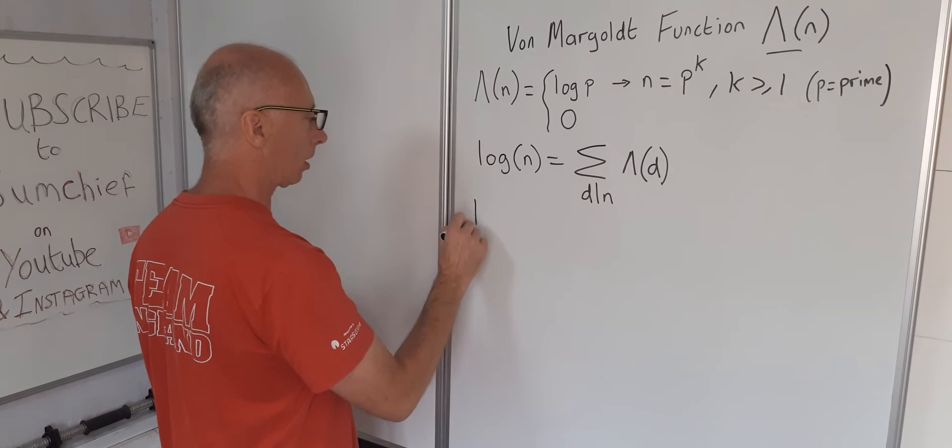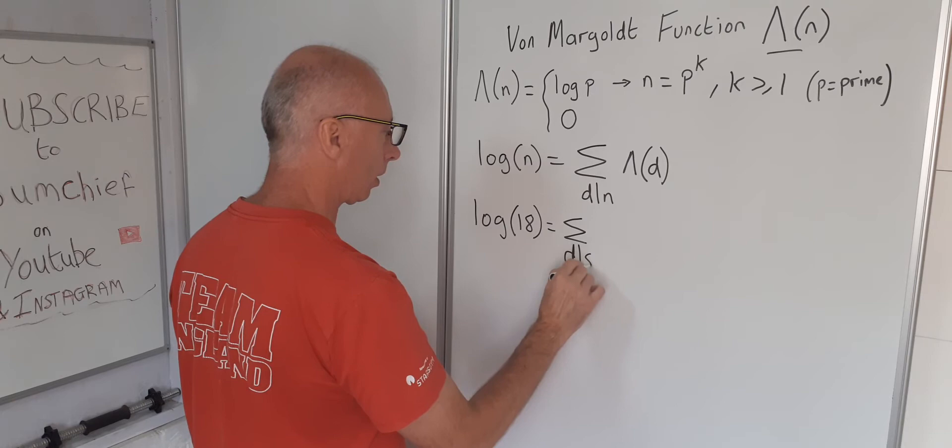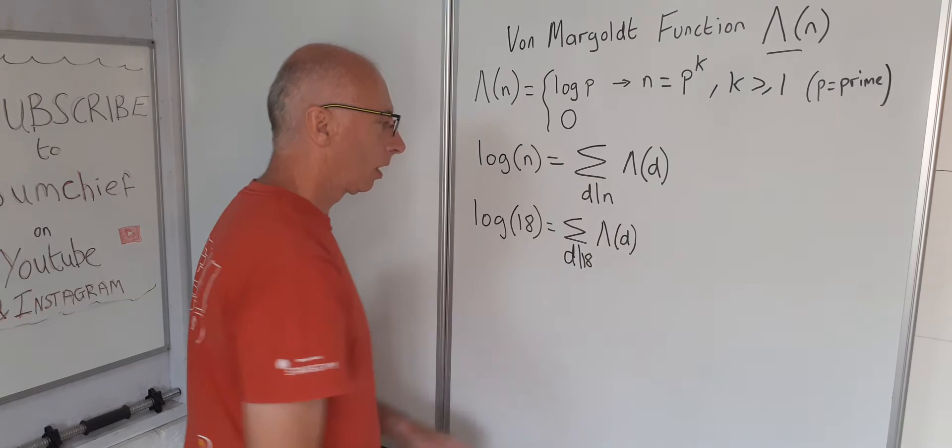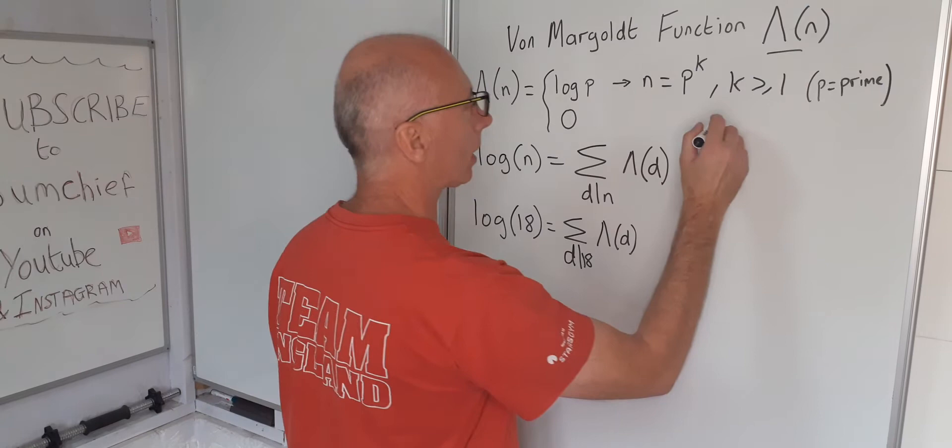For example, let's look at log of 18. That will equal the sum of all the divisors of 18. So when this letter here is the capital lambda Greek letter of the alphabet. Divisors of 18.